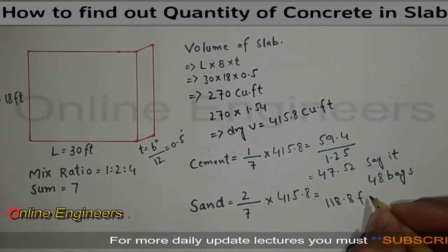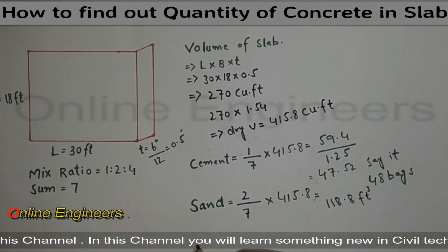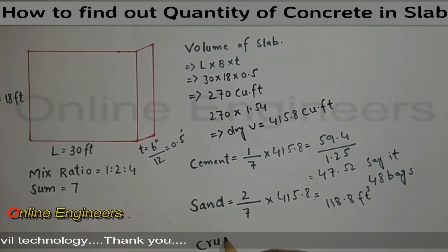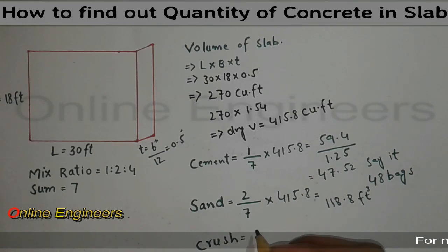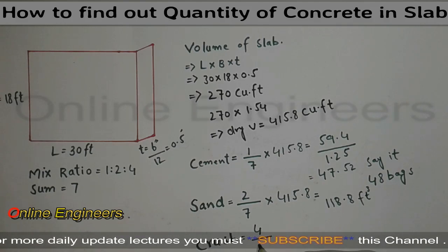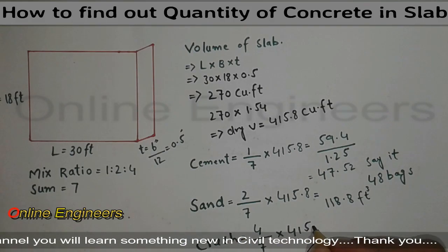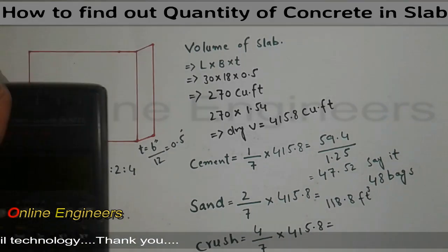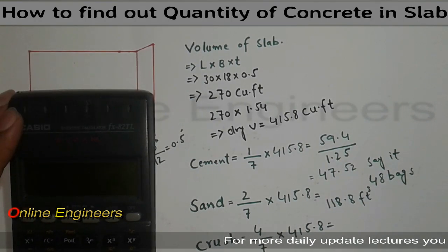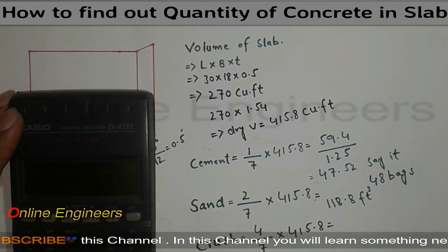Now I want to find out coarse aggregate, which is crush. We have ratio here is 4, also we have sum, and multiply by volume of slab. 4 divided by 7, then multiply by 415.8.